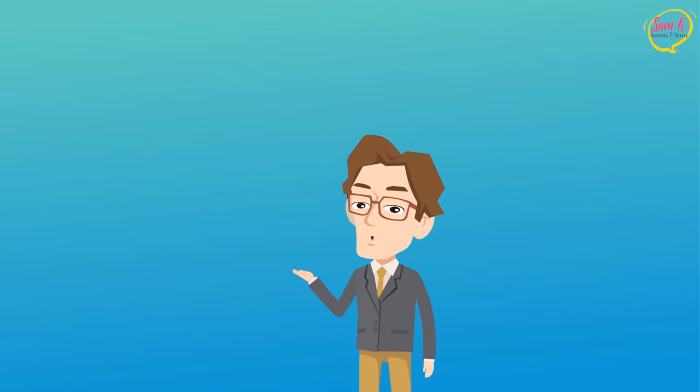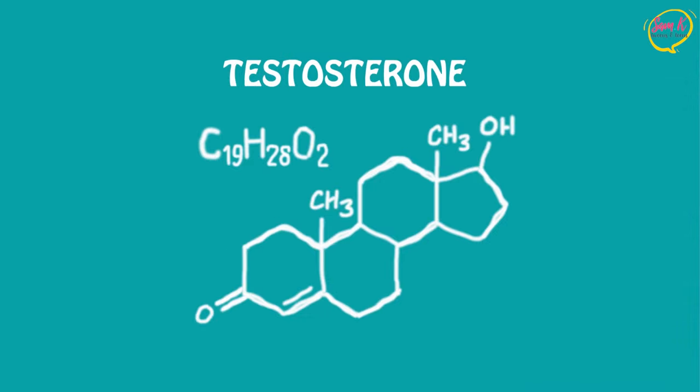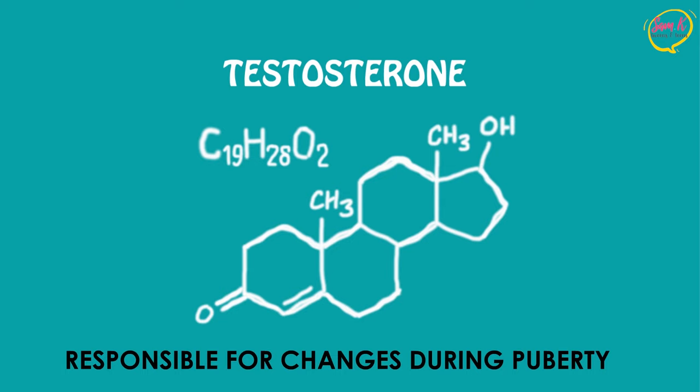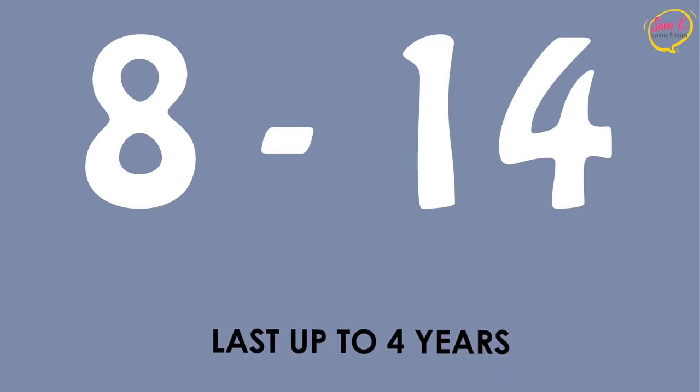Male puberty begins when you reach a certain age and start releasing hormones that trigger the production of testosterone and sperm. Testosterone is the hormone responsible for most changes in your body during puberty, which generally starts between the ages of 8 and 14 and lasts up to 4 years.